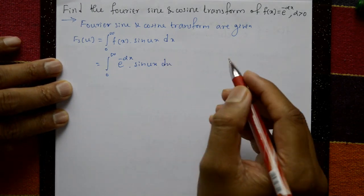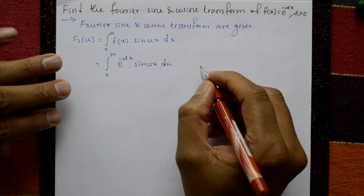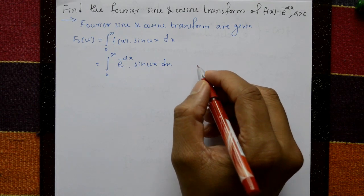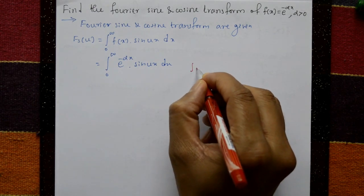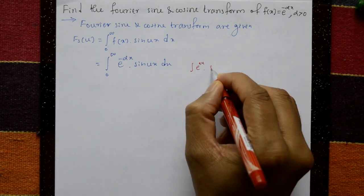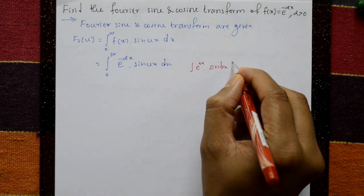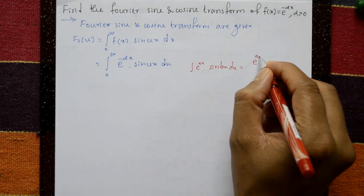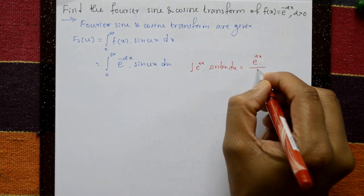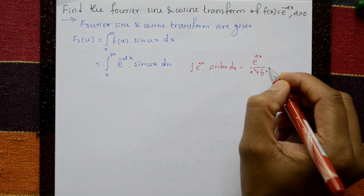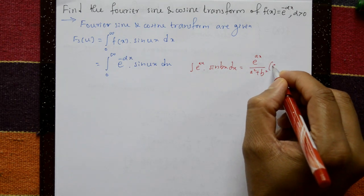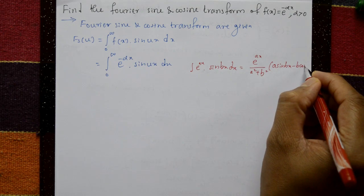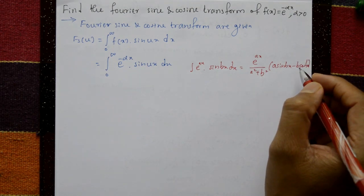Now we know the standard formula. The standard formula is: the integration of e raised to ax into sine(bx) with respect to x equals e raised to ax upon (a squared plus b squared), into (a·sine(bx) minus b·cos(bx)). This is the formula.